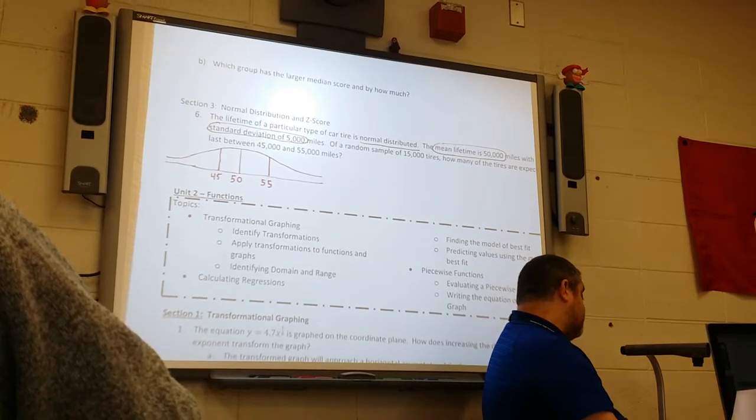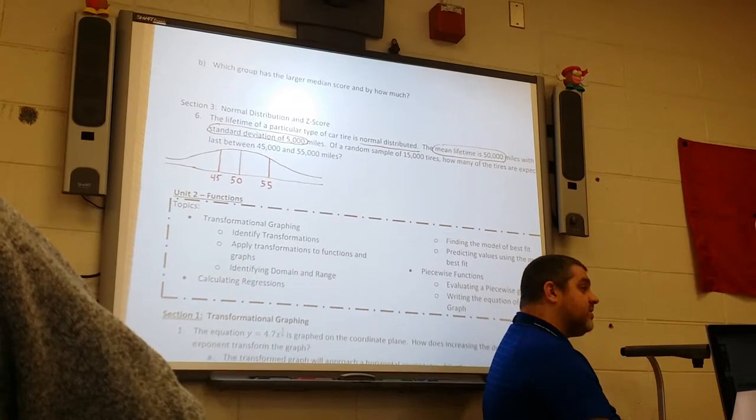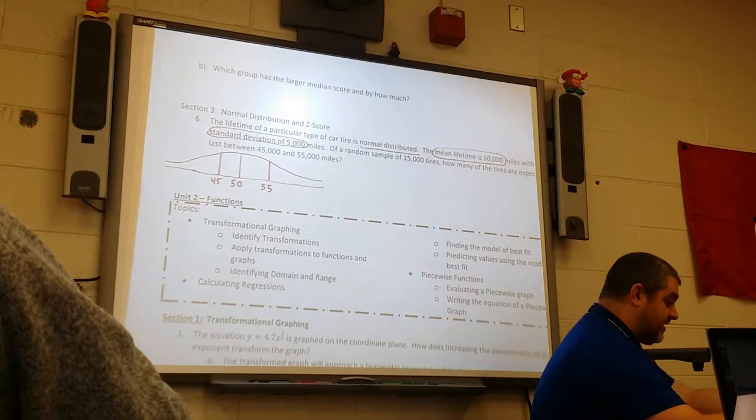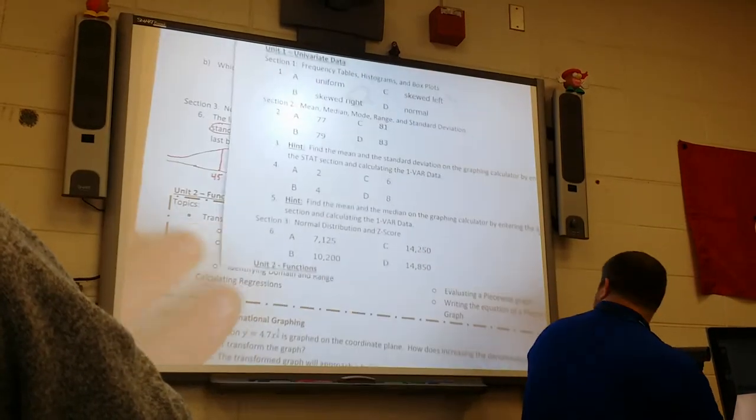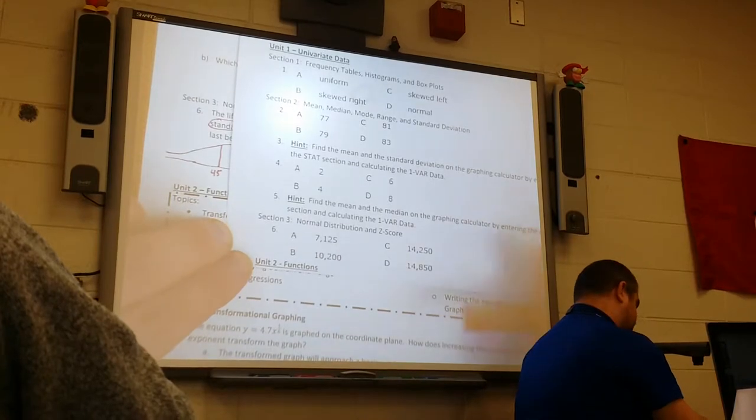Now it wants to know of a random sample of 15,000, how many are going to be between those two numbers. 10,000. Unfortunately, 10,000 is none of my four possible answers for numbers in this. So 10,200.